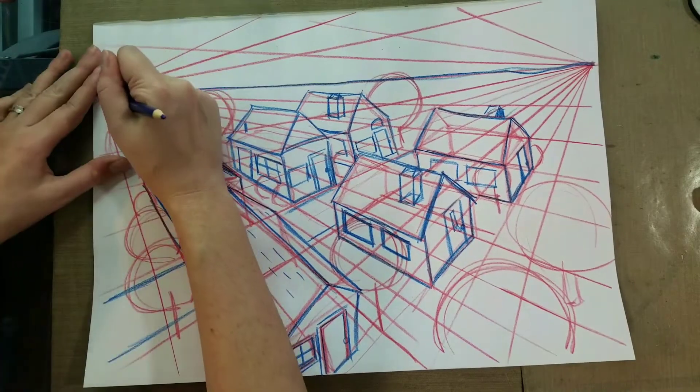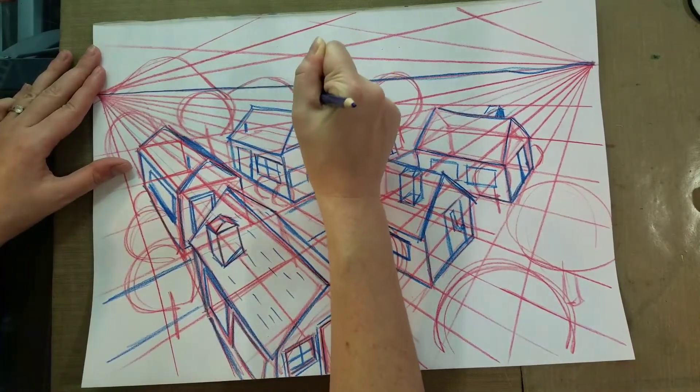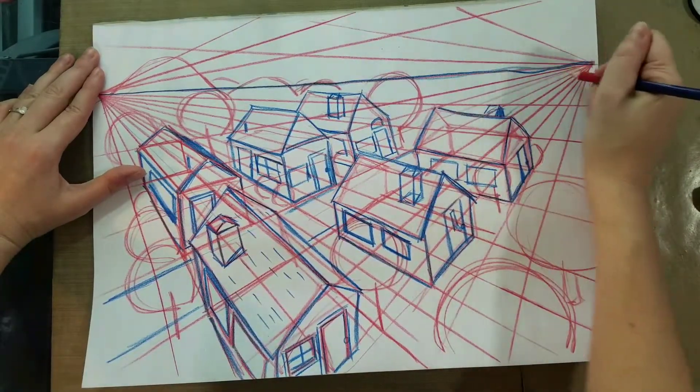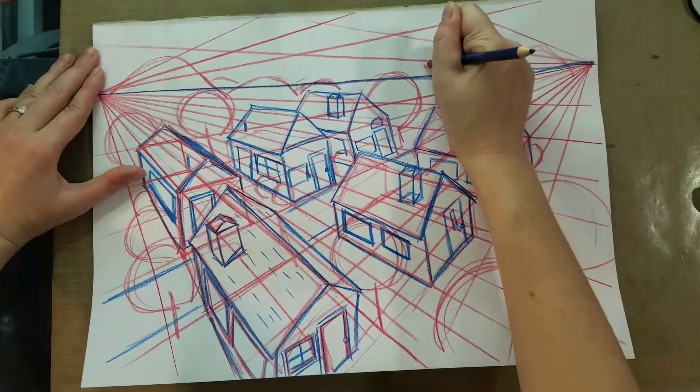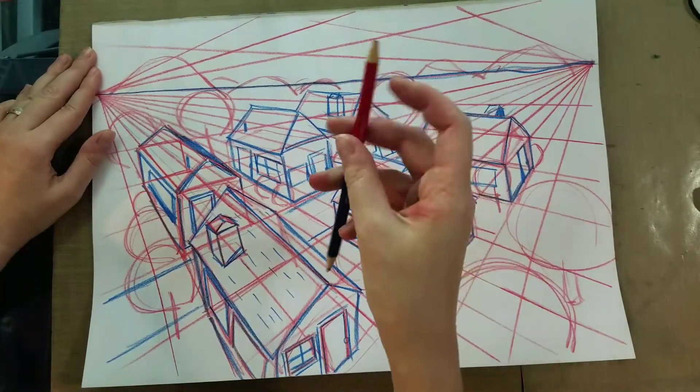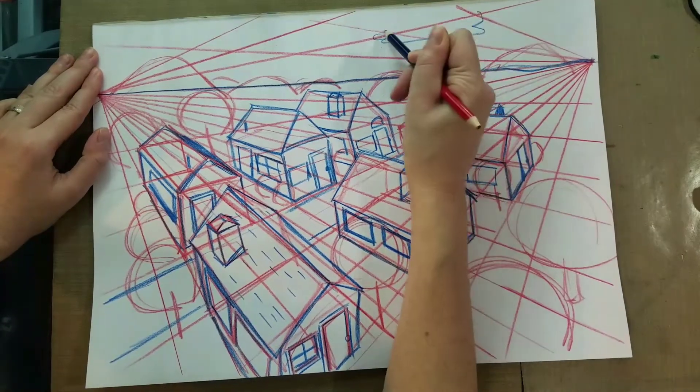So, maybe along the vanishing point, I'll sketch in some foothills or along the horizon line. And then, we'll sketch in some clouds.